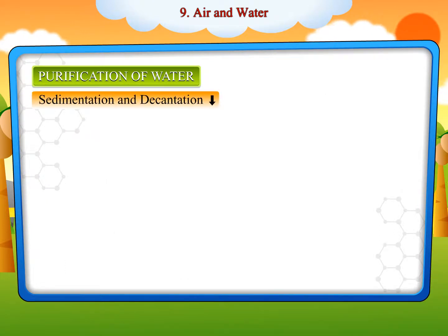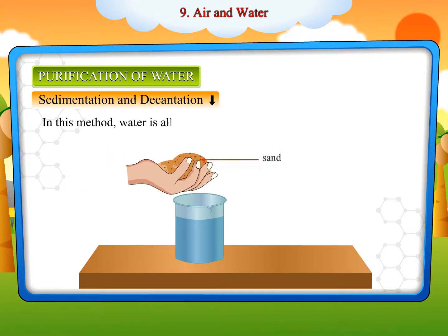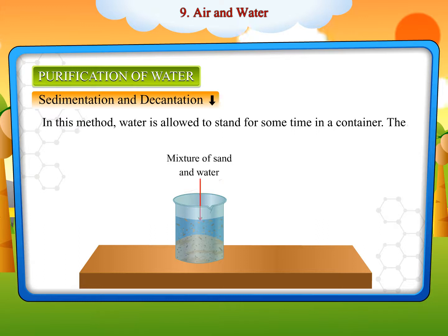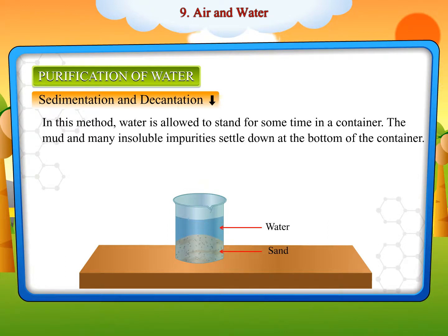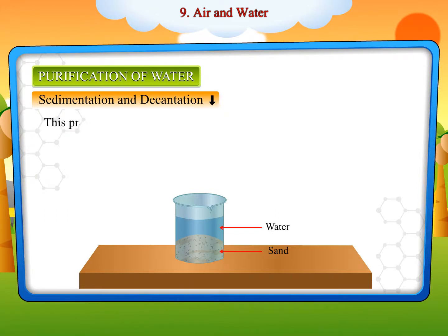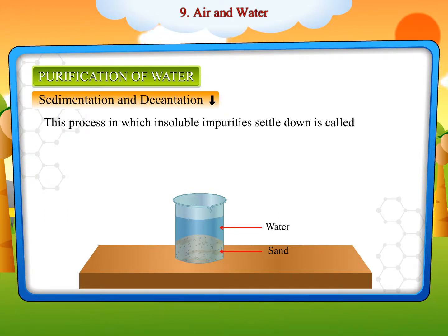Sedimentation and decantation. In this method, water is allowed to stand for some time in a container. The mud and many insoluble impurities settle down at the bottom of the container. This process, in which insoluble impurities settle down, is called sedimentation.